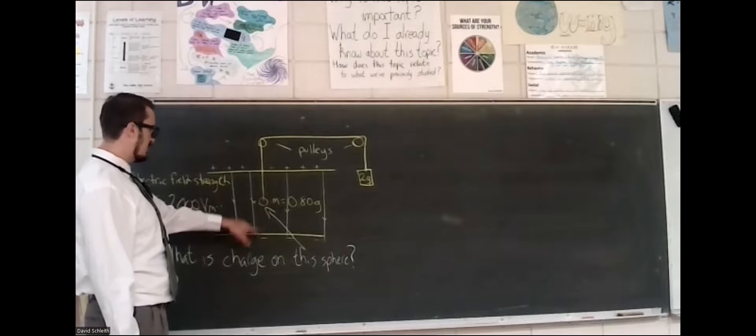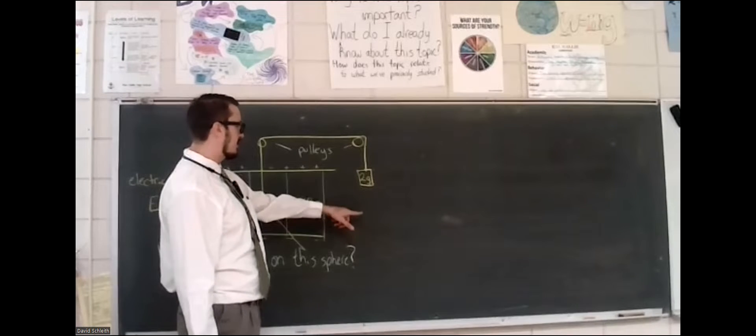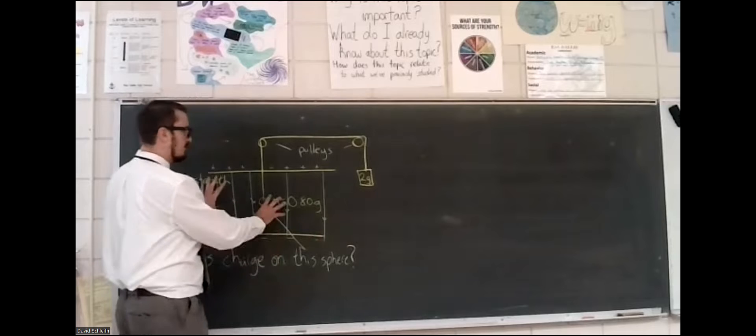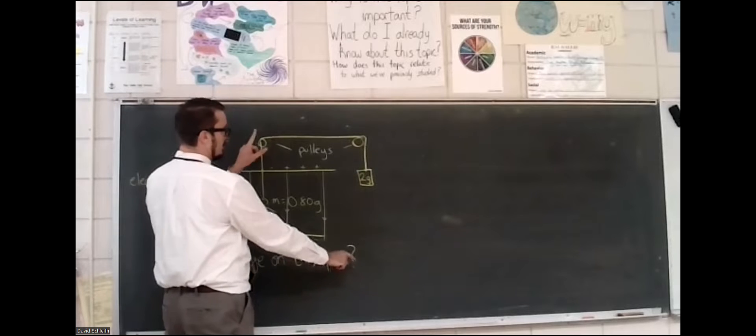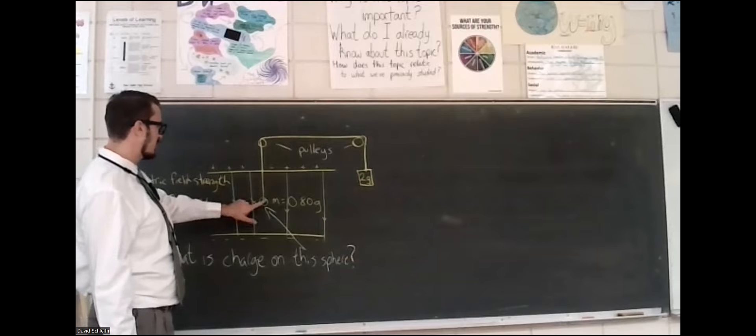So this thing has mass, so it has weight acting down, but this thing has more mass and therefore more weight acting down. Without the electric field, you would expect the system to accelerate this way. But because we know it's in equilibrium, the question tells us that it is, there must be an electric force.